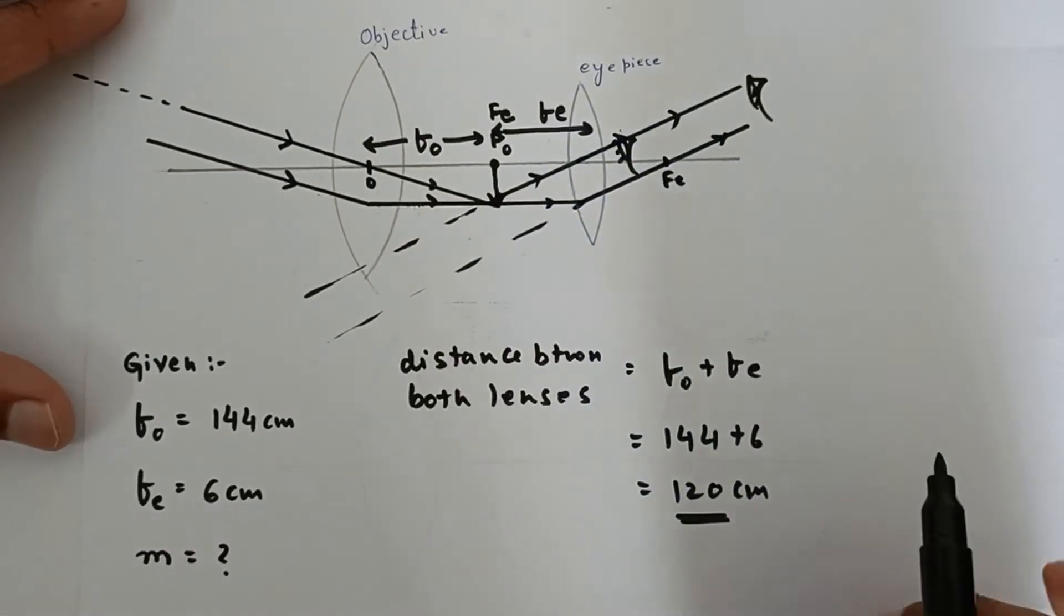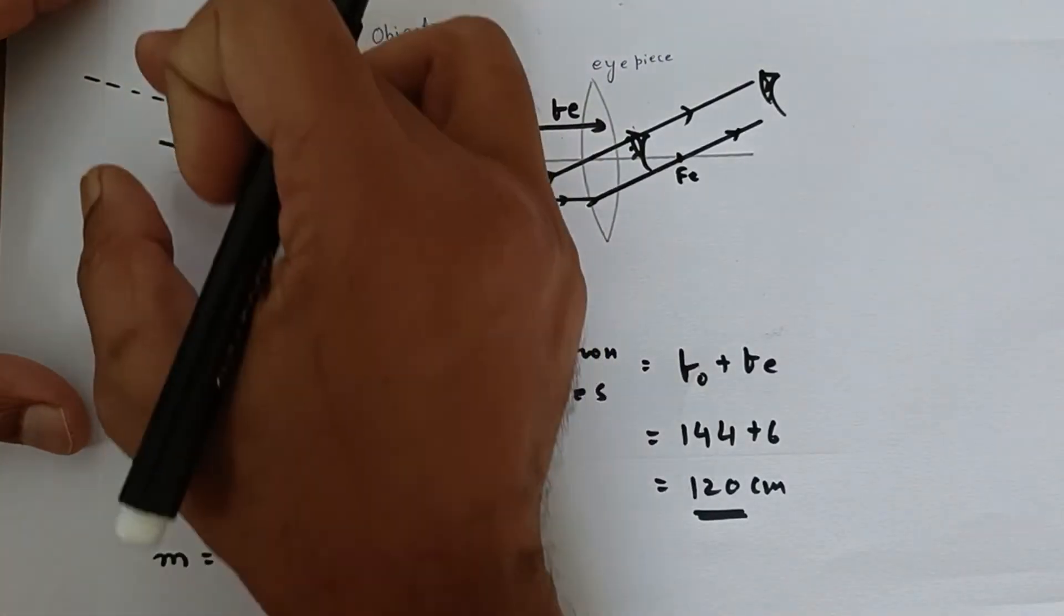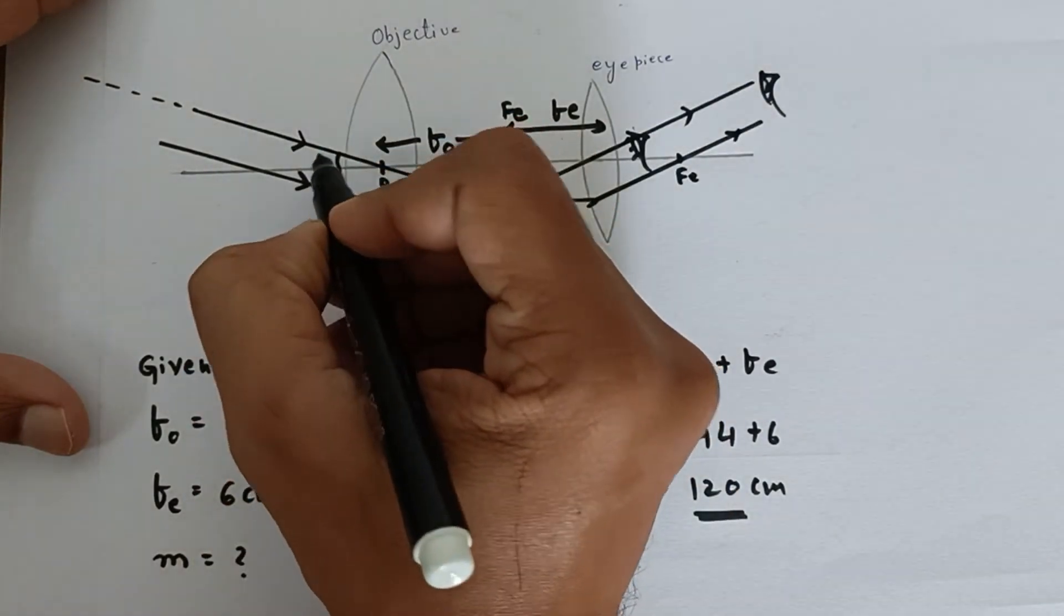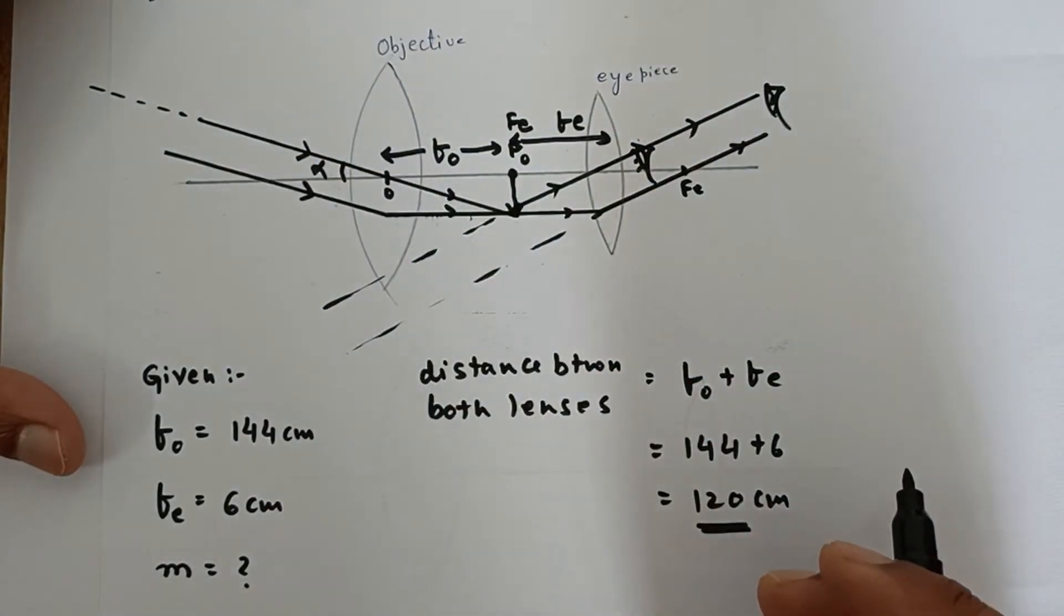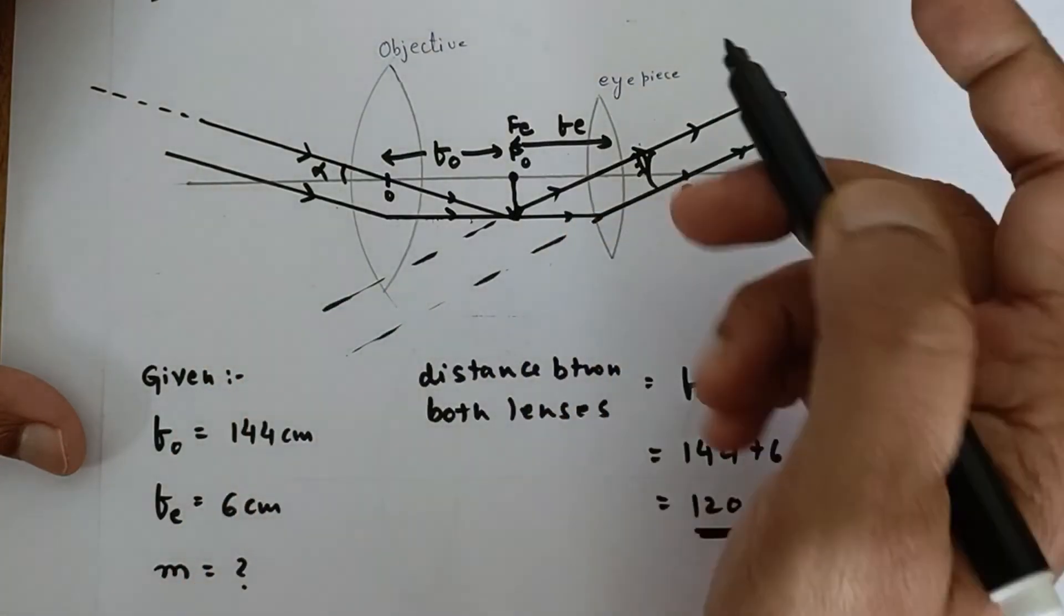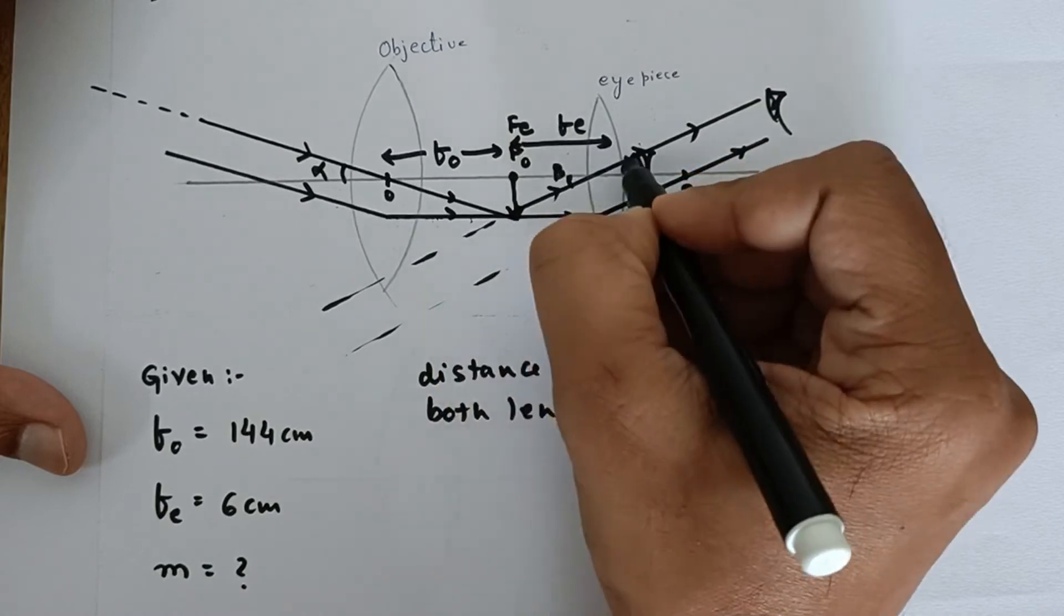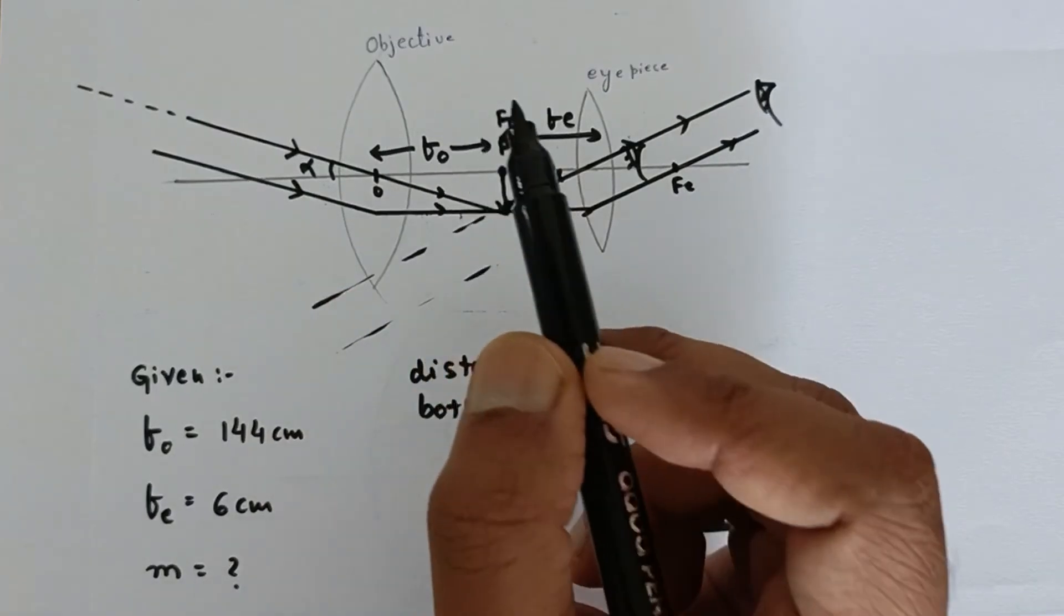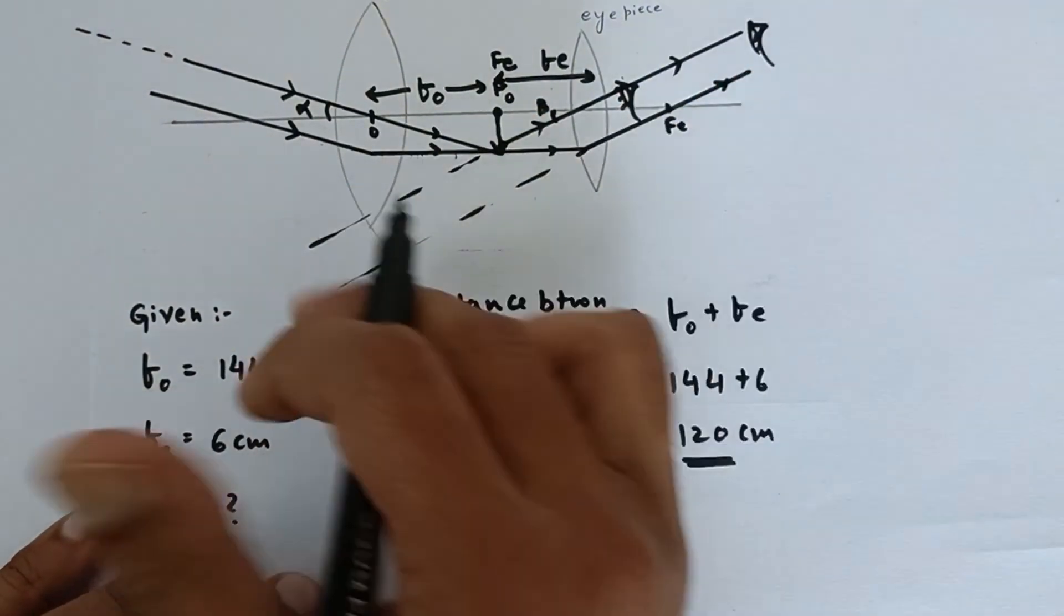Now the magnifying power is not to be confused with magnification. Magnifying power means these incoming rays make certain angle alpha with the lens of the objective of our telescope, and then the final image makes some angle beta with the eyepiece or the eye. So the ratio between these two angles is known as magnifying power.